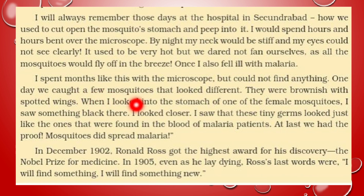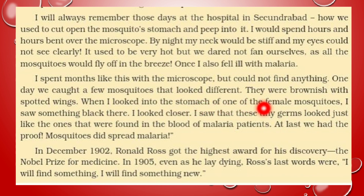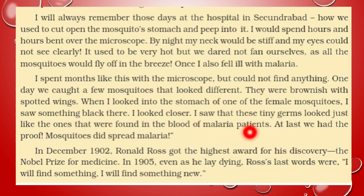One day we caught a few mosquitoes that looked different. एक दिन हमने अलग तरह के mosquitoes को पकड़ा. They were brownish with spotted wings — वो brown color के थे और उनके wings पर धब्बे थे. When I looked into the stomach of those female mosquitoes, I saw something black there. मैंने उनके पेट में कुछ black color का पाया. I looked closer — मैंने बहुत ज़्यादा पास जाकर देखा. I saw that these tiny germs looked just like the ones that were found in the blood of malaria patients. मैंने देखा कि ये germs बिल्कुल वैसे ही हैं जैसे हमने malaria के patients के blood में पाए थे. At last we had the proof — mosquitoes did spread malaria.